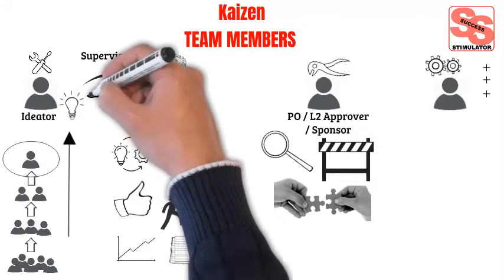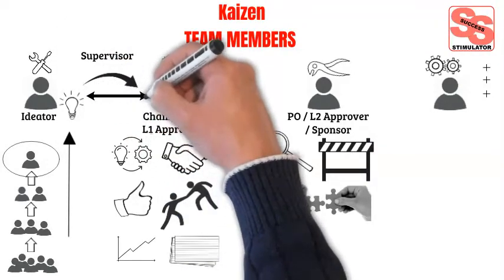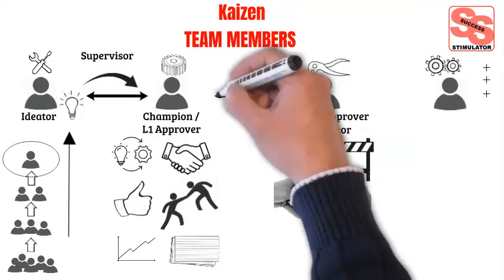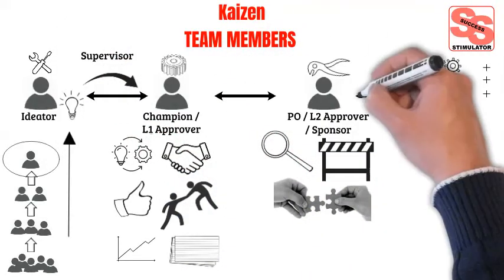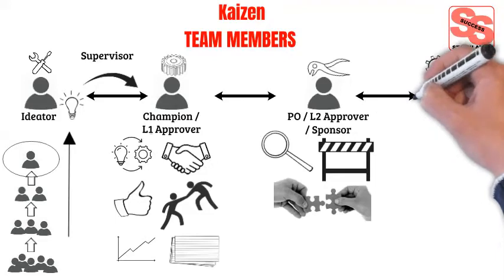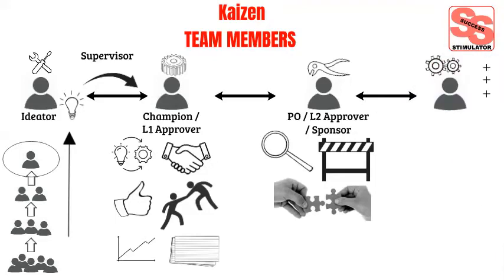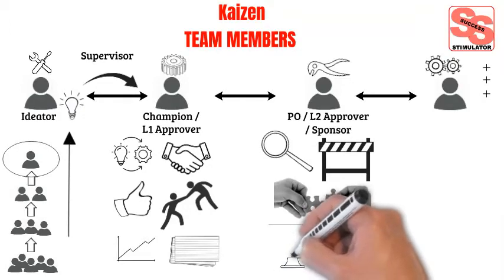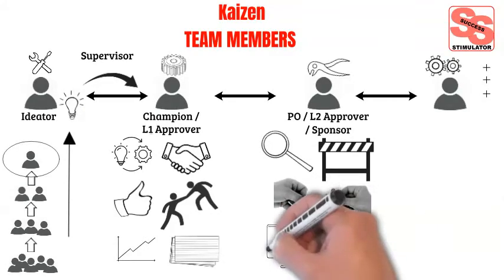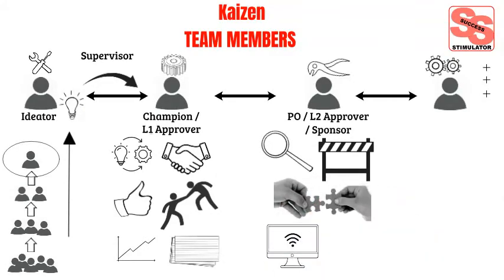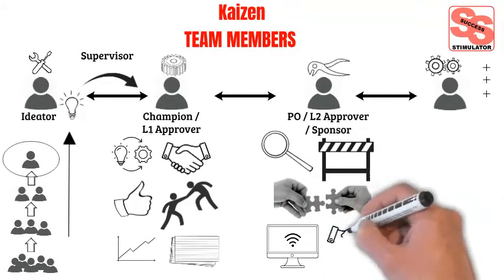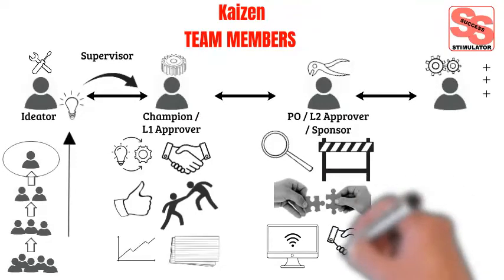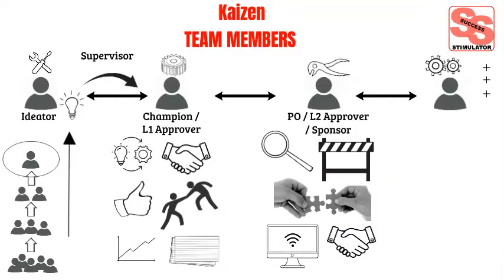The team sponsor is also responsible for making sure that the functions of each team member are covered during the Kaizen event, so that participants can focus 100% of their energy on the improvement project. When the event is complete, the team sponsor ensures that success is broadcast to the organization and that participants are recognized for their efforts.